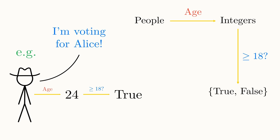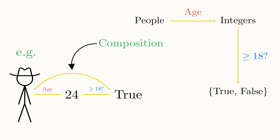But is there a faster way? Luckily, there is. Whenever we have two functions where the end of one is the same set as the start of the next, we can always create a new function that simply chains them together. In this instance, it would map a person straight onto true or false, depending on whether their age is greater than or equal to 18. We say that this function is the composition of the functions age and greater than or equal to 18. And we write this new function as greater than or equal to 18, circle age.